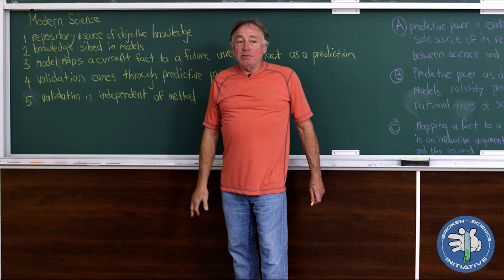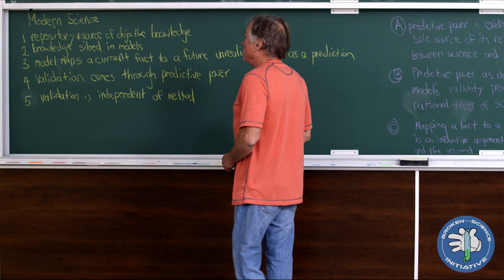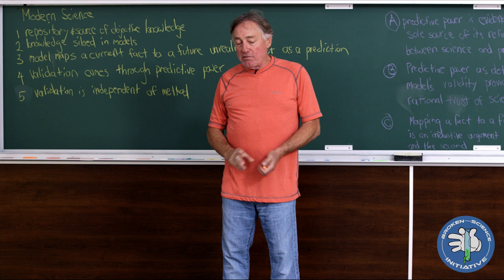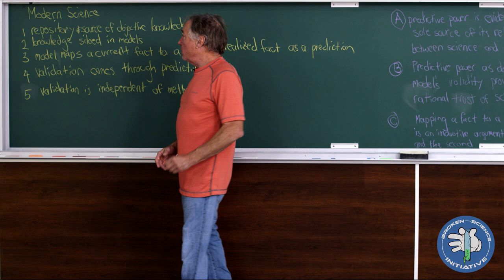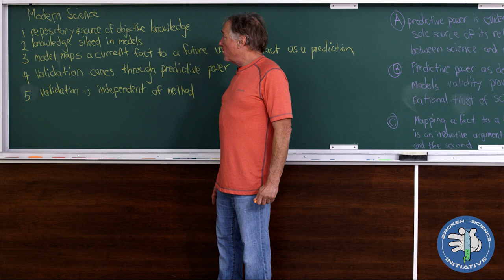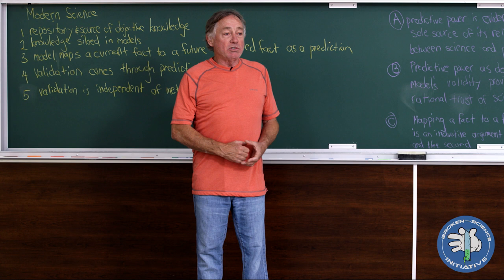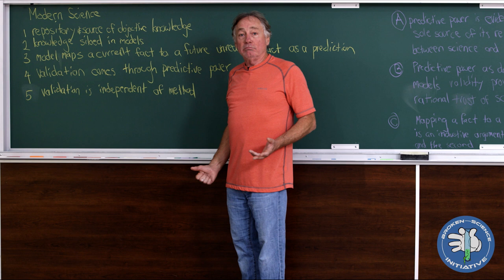I've got five facets of modern science. They're kind of fun. If you hold onto this and pay attention and think about it, it jives well with common sense. I got these from a work, Evolution and Science, that my father had put together, Jeff Glassman, after retiring as head of research, internal research and development at Hughes Aircraft Company. But this is how it goes. This is what modern science is. One, it's repository and source of objective knowledge. Two, this knowledge is siloed in models.